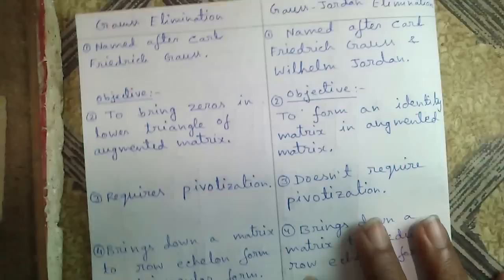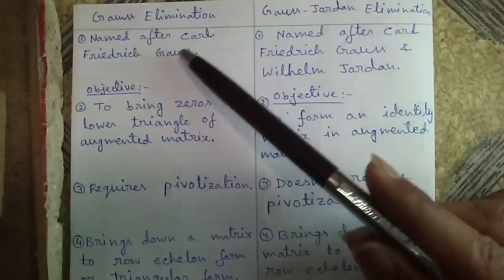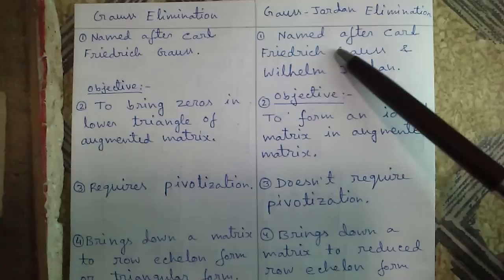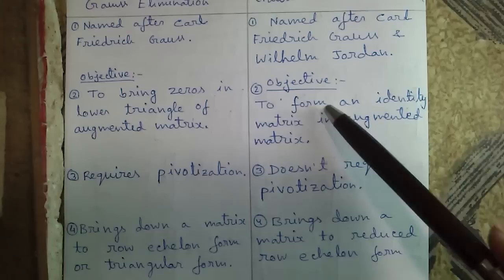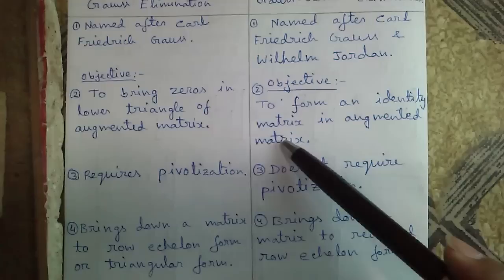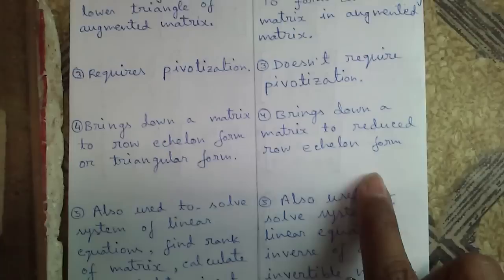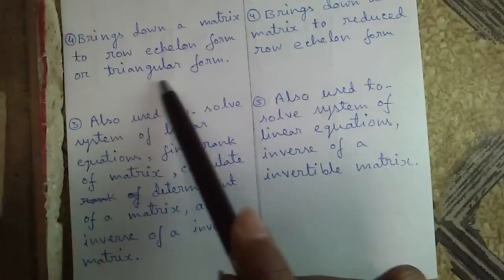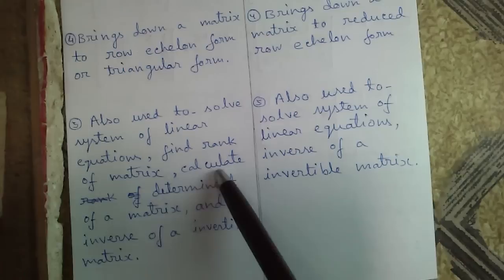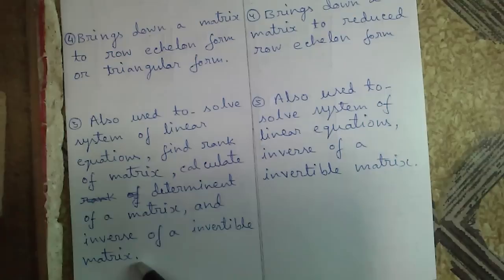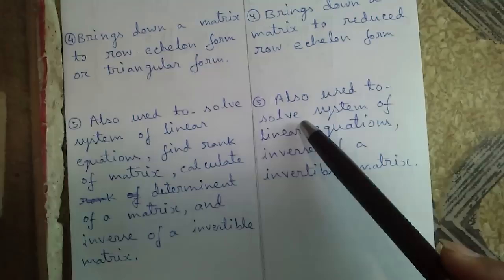Now the difference. Gauss-Jordan elimination is named after Karl Friedrich Gauss and Willem Jordan. The objective of Gauss elimination is to bring zeros in the lower triangle of the coefficient matrix, while the objective of Gauss-Jordan elimination is to form an identity matrix in the coefficient matrix. Gauss elimination brings the matrix to row echelon form, while Gauss-Jordan brings it to reduced row echelon form. Gauss elimination is used to solve systems of linear equations, find the rank of a matrix, calculate the determinant, and find the inverse of an invertible matrix. Gauss-Jordan is used to solve systems of linear equations and to find the inverse of an invertible matrix.